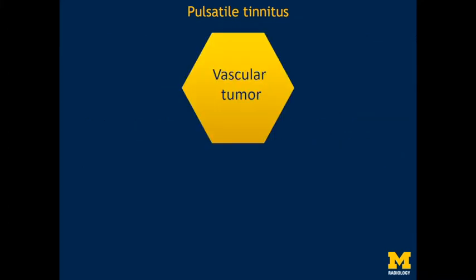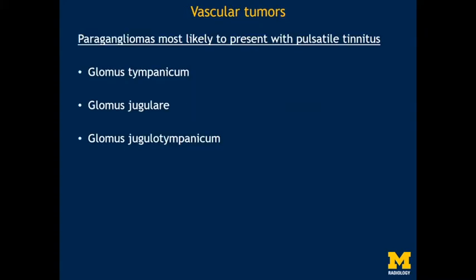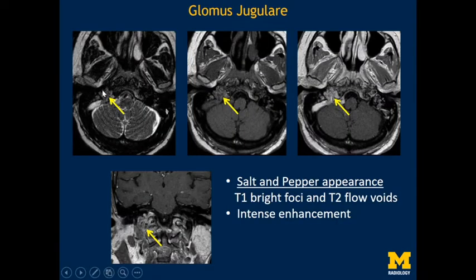When approaching pulsatile tinnitus, the first thing to look for is whether a vascular tumor is present — specifically vascular tumors in the vicinity of the temporal bone and skull base. One common entity is a paraganglioma, such as glomus jugulare, glomus tympanicum, or glomus jugulotympanicum. Here is an example of a patient with right-sided pulsatile tinnitus showing the classical salt-and-pepper appearance. Salt is the bright area on T1-weighted images; pepper is the presence of flow voids on T2-weighted images with intense post-contrast enhancement. This is a classical glomus jugulare on the right side.